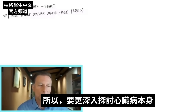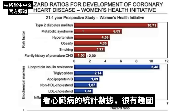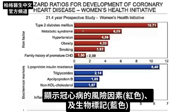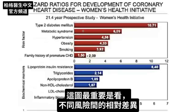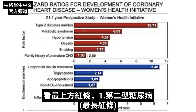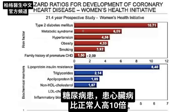So what we need to do is look a little bit more at heart disease itself. I have a very interesting graph showing the risk factors for coronary heart disease as well as the biomarkers — little red flags which tell you the risk of getting a heart attack. What's so important about this graph is to look at the relative differences between the different risks. If we look at type 2 diabetes, you're at more than a 10 times risk of developing heart disease compared to people without diabetes.